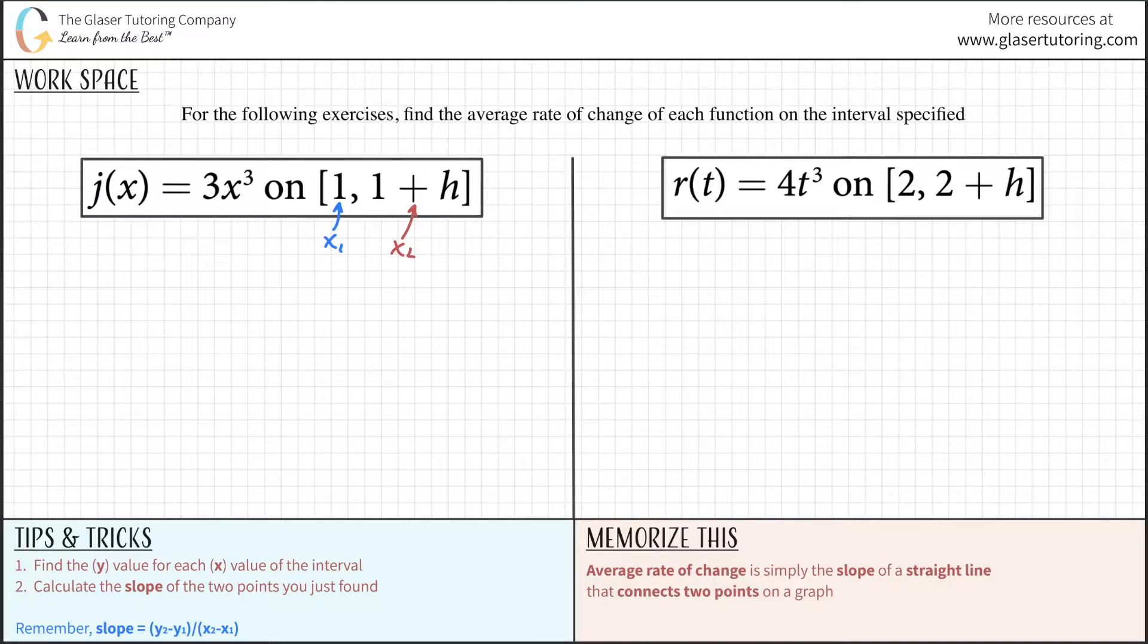First, for x1, we take this and plug it in for x. So j of 1 equals 3 times 1 cubed, which is 3. We have a coordinate: when x is 1, j of 1 (which is y) is 3. This is one pair of coordinates.